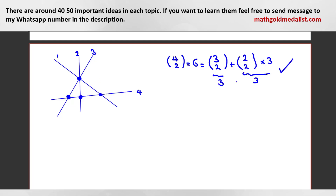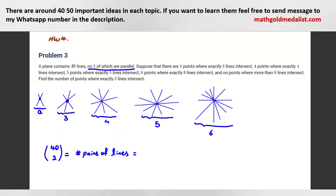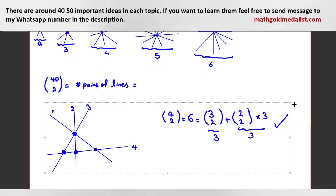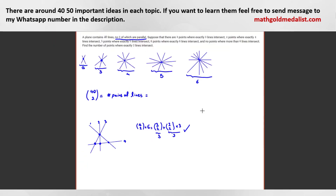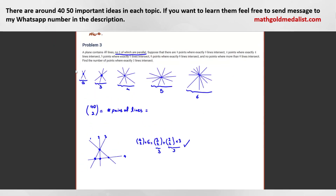Now I want to apply exactly this to our problem to find 'a' — the number of points where exactly two lines intersect. Pay attention to this example and try to count on your own first.